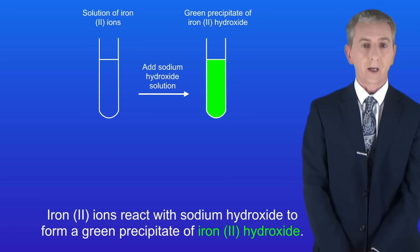Iron 2 ions react with sodium hydroxide to form a green precipitate of iron 2 hydroxide. And here's the equation.